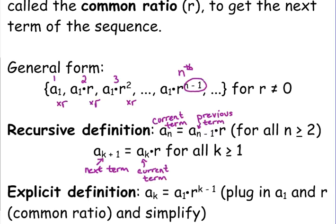We start with 1 in that case, because when we plug in 1, we get A sub 2 is equal to A sub 1 times R. So that starts us where we need to start.